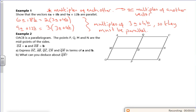Hello, me again. So it says OACB is a parallelogram. P, Q, M, and N are the midpoints of the sides. It says that OA is the vector a. So OA up here is the vector a. OB is the vector b.